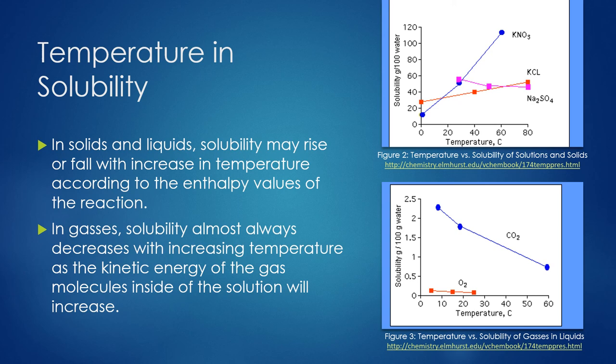Similarly to the solubility of solids and liquids in the previous lectures, temperature plays a big role in determining the solubility of gases in liquids. However, the difference arises in how their solubilities are affected by these changes in temperature. In solids, solubility can increase or decrease depending on whether the reaction is endothermic or exothermic. For example, in the top right diagram you can see that potassium nitrate solubility increases with temperature while sodium sulfate solubility decreases.